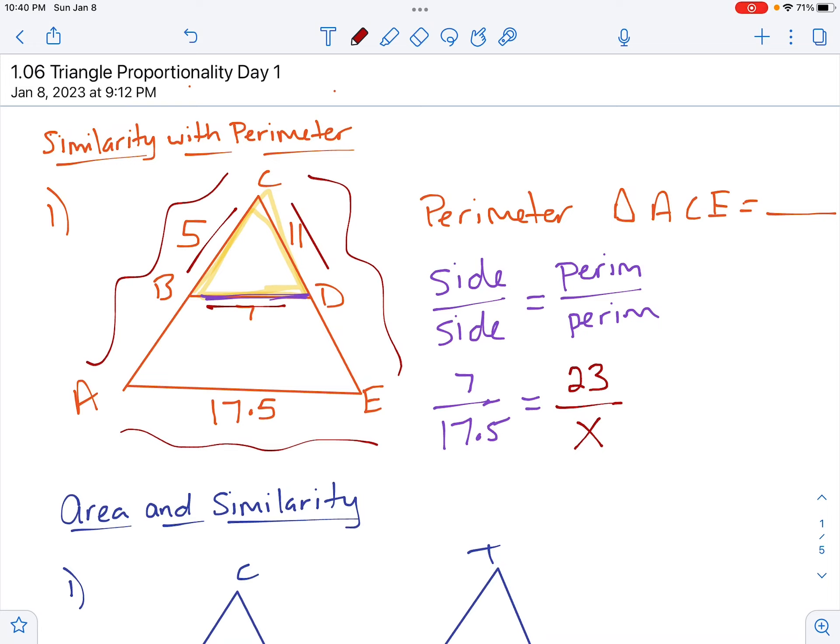From here, just like we have been doing, we're going to cross multiply. So I'm going to multiply this diagonal first. We have 7 times X is 7X. And then we're going to go the other way. We have 23 times 17.5, which is 402.5. And then solve. I'm going to divide by 7, divide by 7, and that leaves us with X equals 57.5.